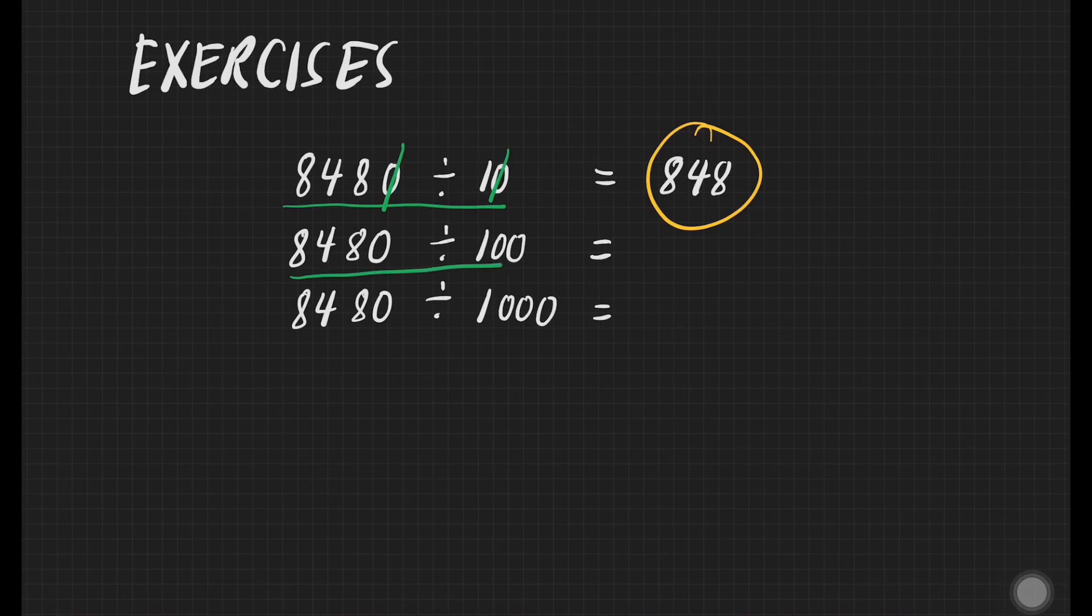Next question. We have 8,480 divided by 100. We can cancel one zero from the dividend and one zero from our divisor. If you can see, we still have one zero in our divisor. We can say that in our remainder, there is one digit number. And that will be 8. Our final answer will be 84 remainder 8.